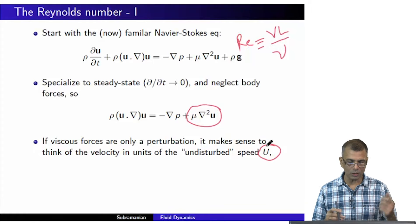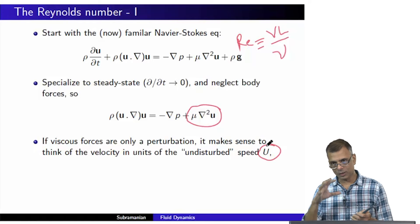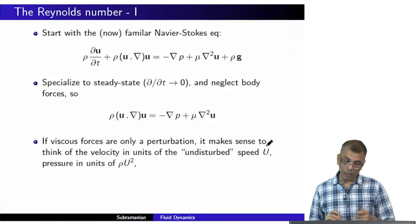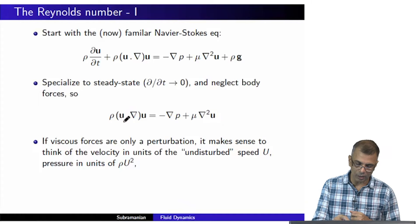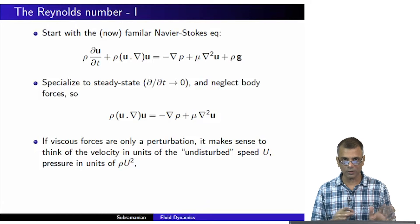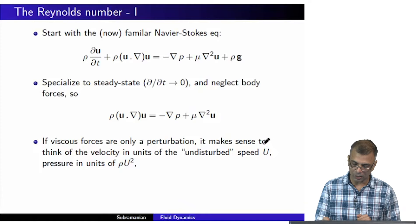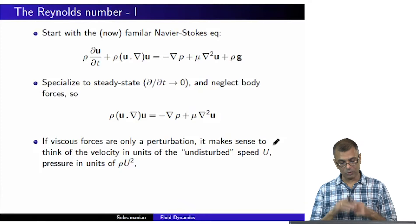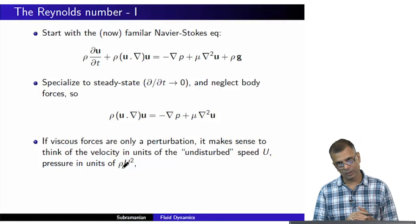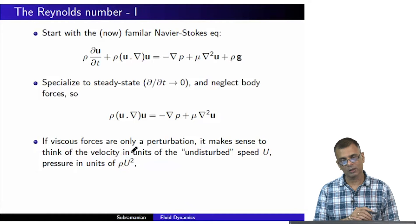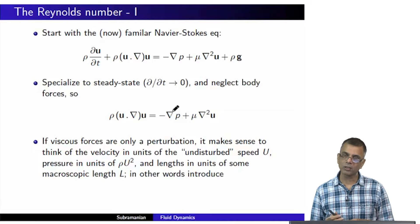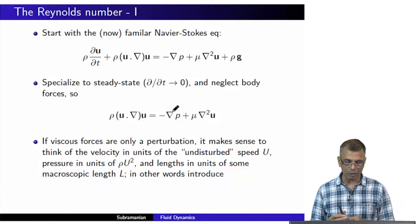To think of a concrete situation, imagine a low-viscosity fluid flowing past a sphere. Capital U would be the speed of the fluid sufficiently far away from the boundary of the sphere. It makes sense to think of velocities in units of this undisturbed speed U. So wherever I see small u, I normalize it with respect to capital U. I can also consider pressure in units of rho U squared — you can verify this has the units of pressure. Lengths are measured in units of some macroscopic length L.